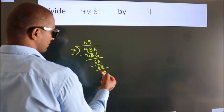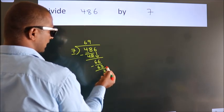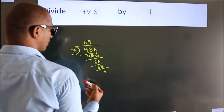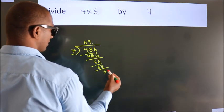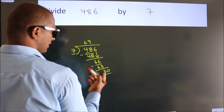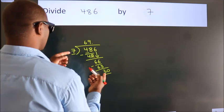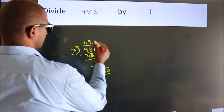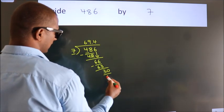After this, no more numbers to bring it down. So, what we do is, we put dot, take 0. So, 30. A number close to 30 in 7 table is 7, 4, 28.